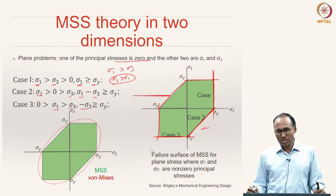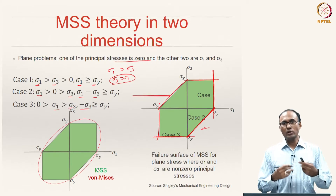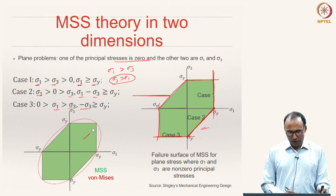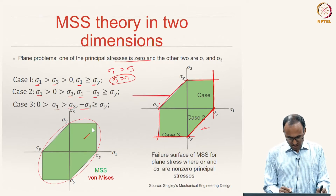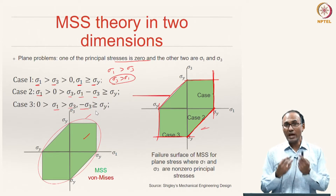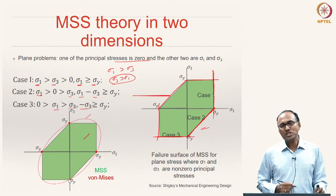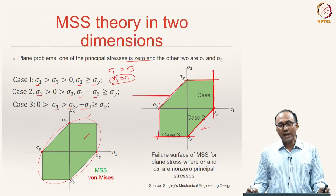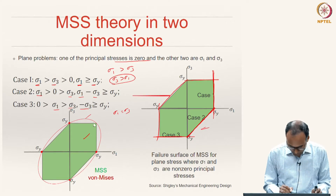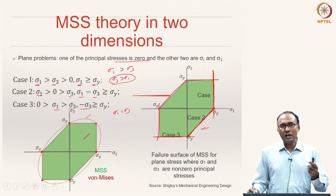In 2D, the maximum shear stress theory looks like a hexagon. When you plot both maximum shear stress theory and distortion energy theory together, the green area represents maximum shear stress theory and the red curve represents the boundary of distortion energy theory. You can clearly see that during uniaxial tension or compression test, both theories give you the same factor of safety. They also coincide when sigma 1 equals sigma 3.